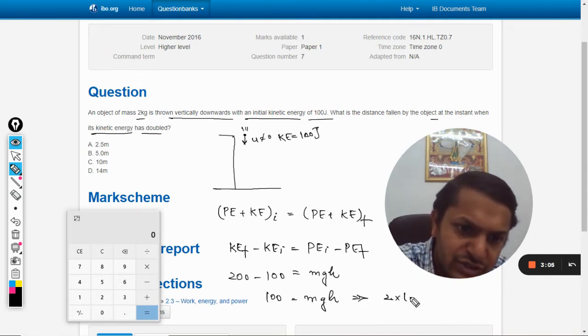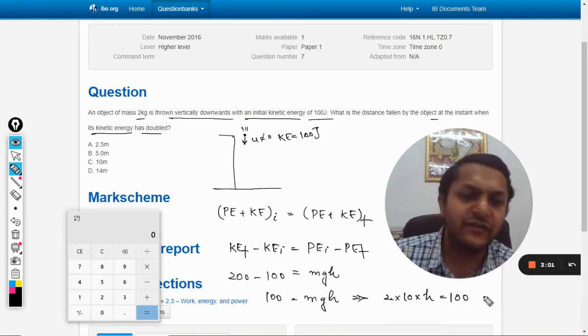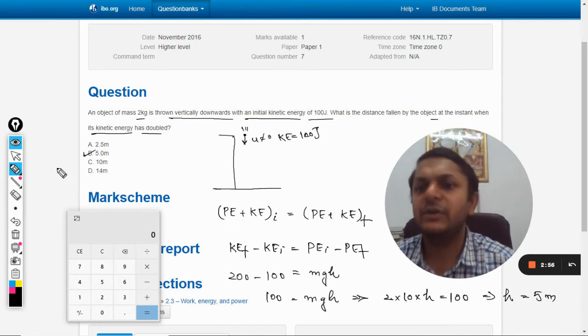Mass is 2, g is 10, h is equal to 100. And from there we can find our h which is coming out to be 5 meters.